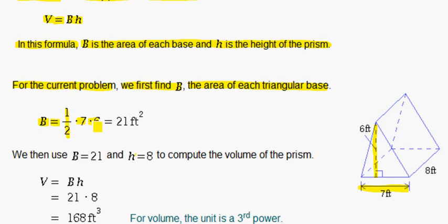So 7 times 6 is 42. 42 times one-half is half of 42. So that equals 21.